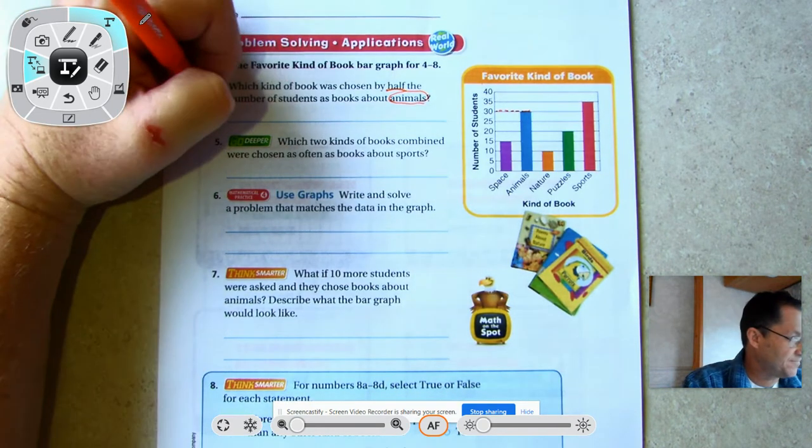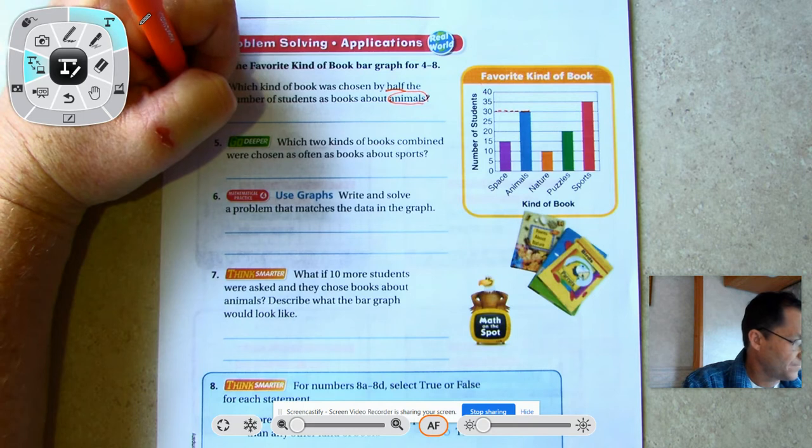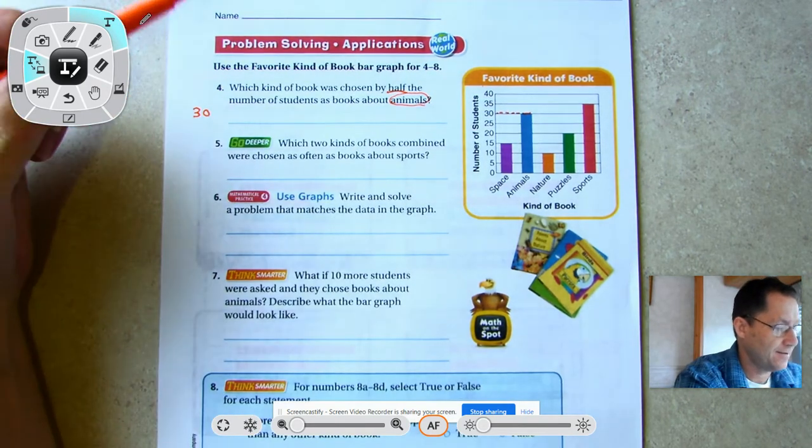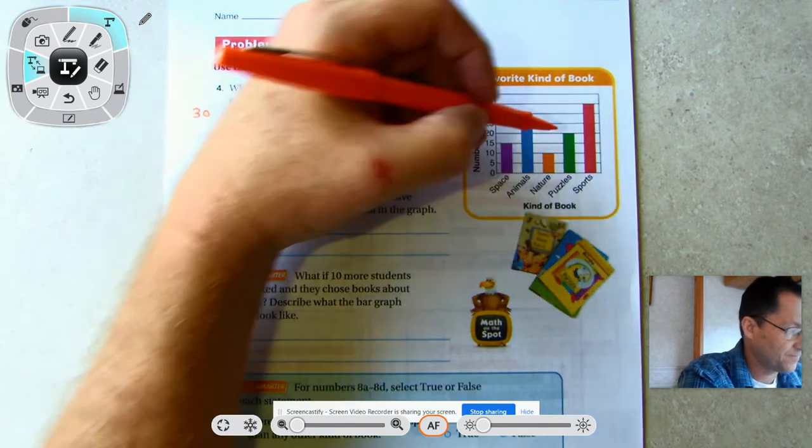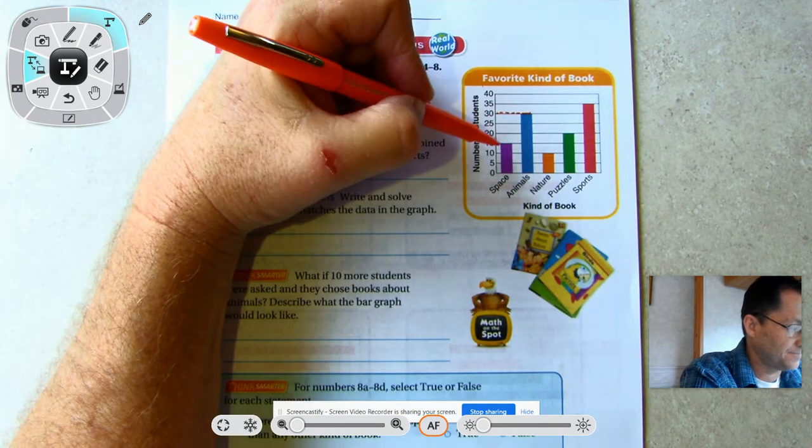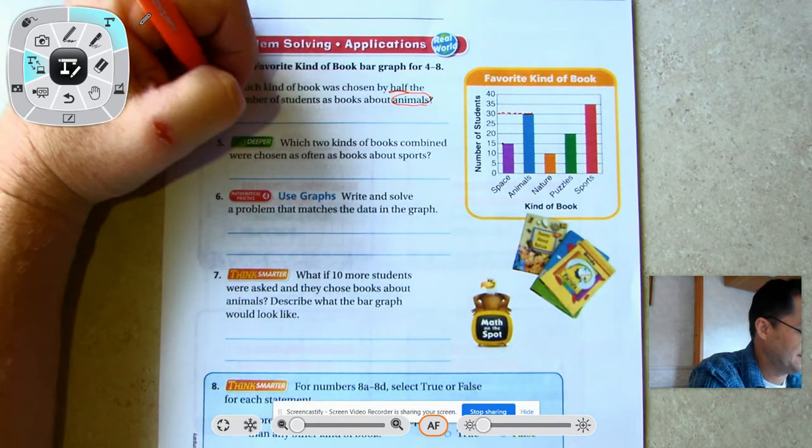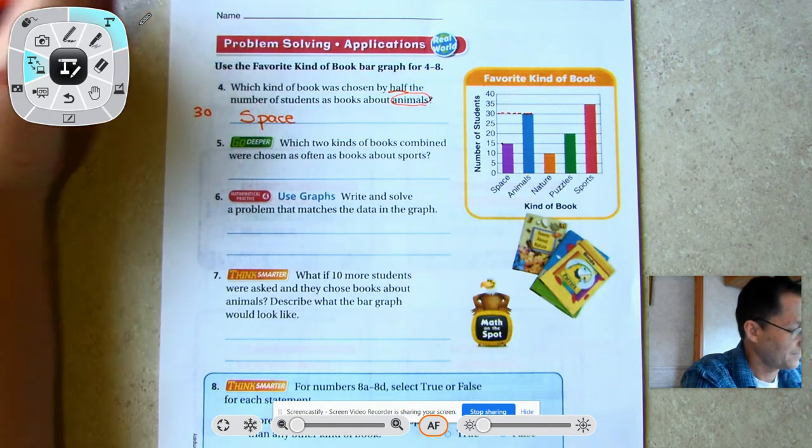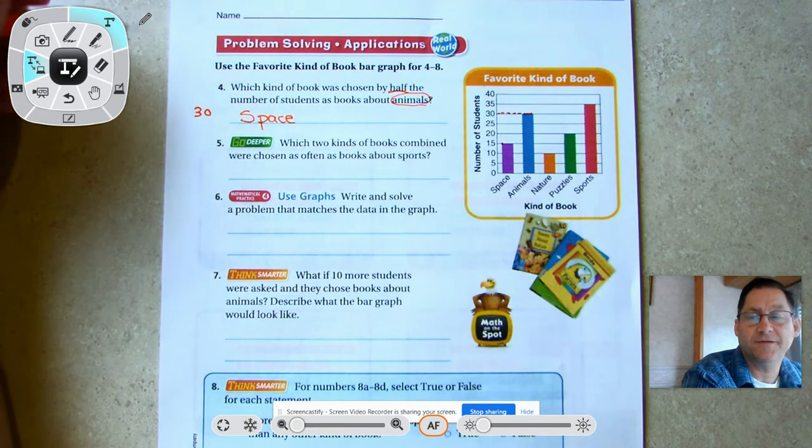Find animals - we see that as 30. What's half as tall as the animals? 15. Space. Half of 30 is 15.